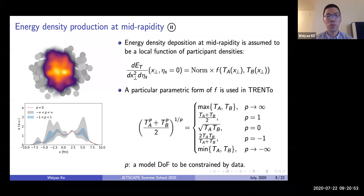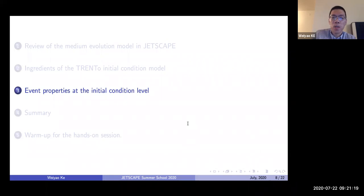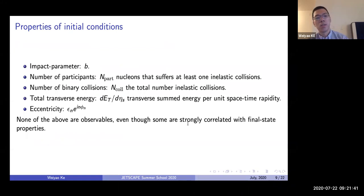So that's a brief introduction of Trento. It tells you how to go from an event-by-event fluctuating nuclear configuration to the mid-rapidity energy deposition. In principle, to get meaningful predictions to be compared with data, you have to run through the initial condition through the dynamical model. But even at the initial condition level, there are some quantities strongly correlated with the final state that are interesting event properties we can study.